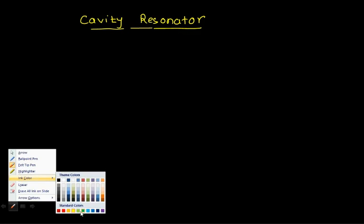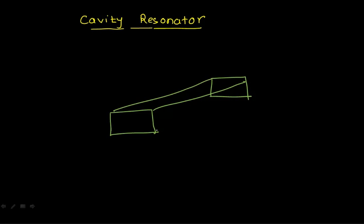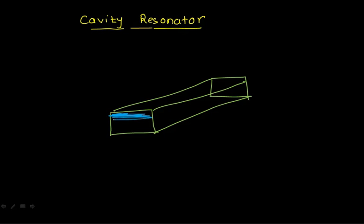We've gone through what a waveguide is. Now, what will happen if I close two ends of a rectangular waveguide with shorting plates? In this structure, the dimensions are: width a, height b, and if a shorting plate is placed at the end, that dimension will be called t.